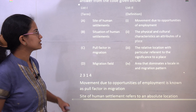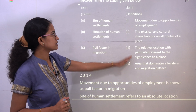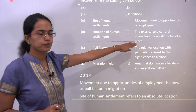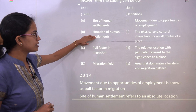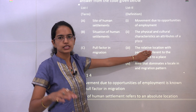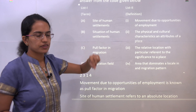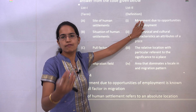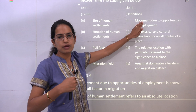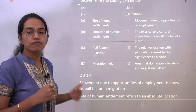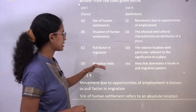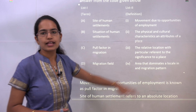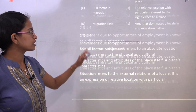The next question requires matching terms with their definitions. The site of a human settlement talks about the physical and cultural characteristics and attributes of the place. Situation refers to relative location with respect to a significant place. Pull factors refer to movement due to opportunity. Migration field is an area that dominates a locale in the migration pattern. Those are the correct options.